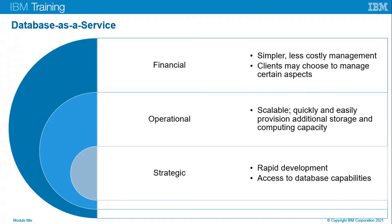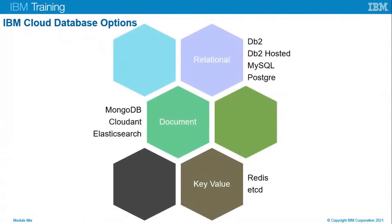IBM Cloud has a multitude of different database options. For relational databases, we have DB2, a fully hosted and highly performant relational database that can run enterprise-class DB2 database engines. DB2 Hosted allows clients to run DB2 with full admin access on cloud infrastructure. We also have MySQL, one of the more popular databases, free under the GNU General Public License. And we have PostgreSQL, an open source object-relational database with over 30 years of history.